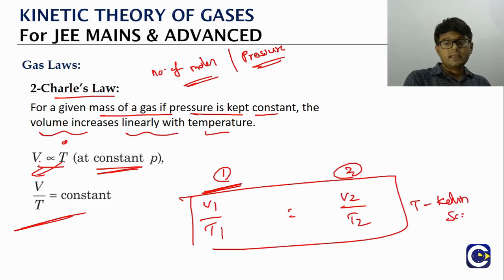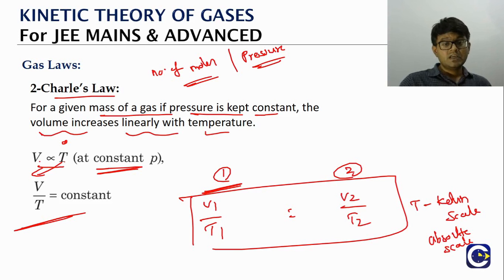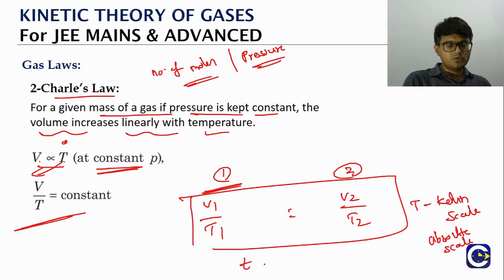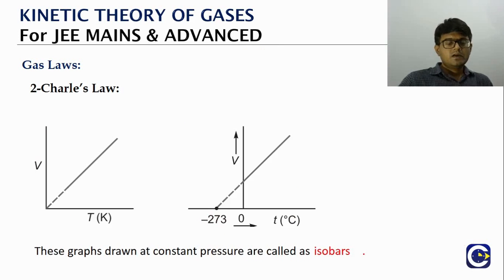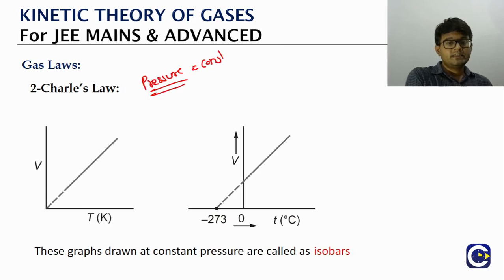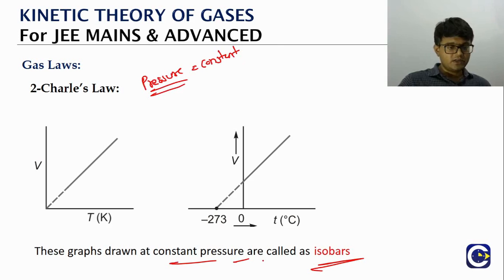If temperature is given in Celsius, convert it to Kelvin by adding 273.15. The graphs for Charles' law are called isobars because pressure is maintained constant. Since V ∝ T (absolute), the V vs T graph is a straight line through the origin, like y = mx.